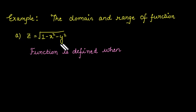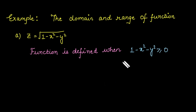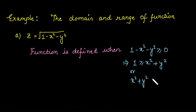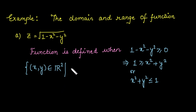We need to find for what values of x and y this function is defined. We know that the square root is defined when 1 − x² − y² ≥ 0. From this condition, we get x² + y² ≤ 1. This indicates that we take those ordered pairs (x, y) from the xy-plane such that x² + y² ≤ 1. The domain is defined by this form.